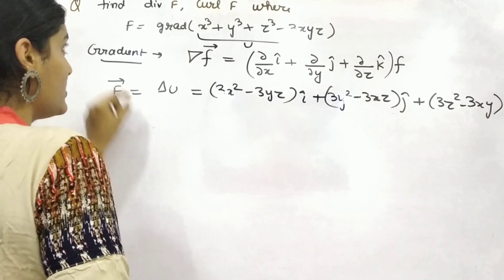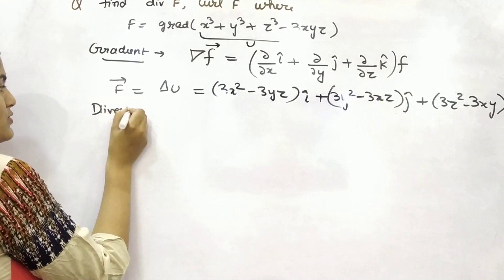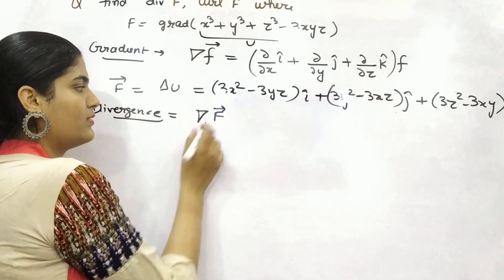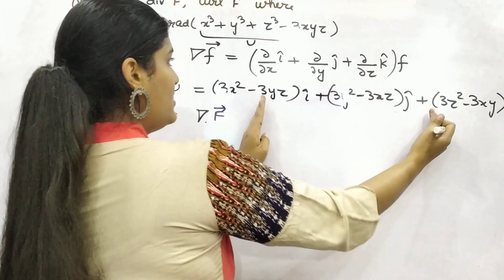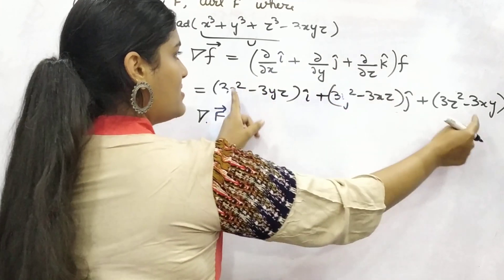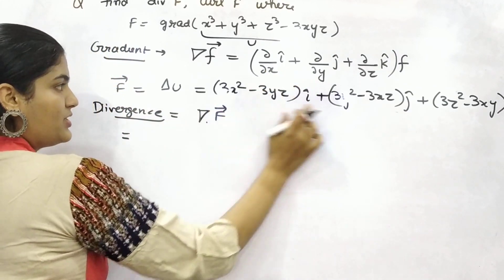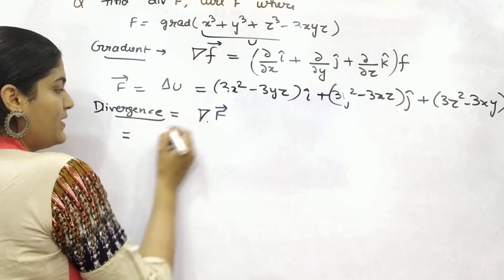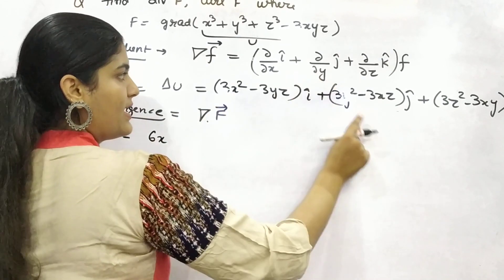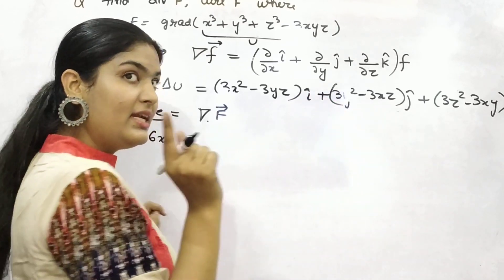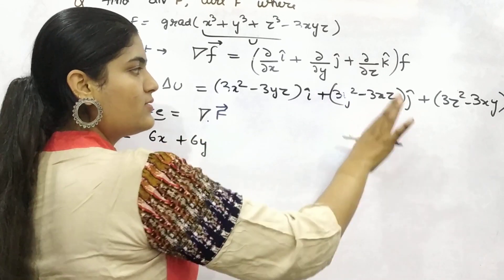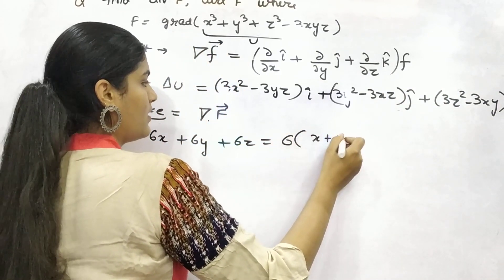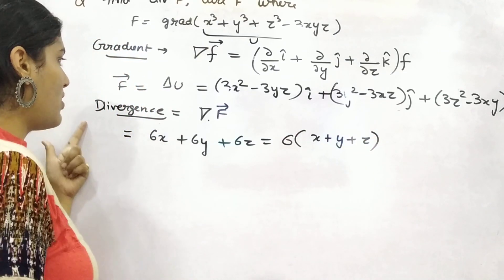Now you have to find out the divergence of f. Divergence is the del dot product applied to that particular function. You need to apply this formula with your function. Differentiate with respect to x — i dot i is 1, so you get 6x (since 3×2=6x) plus 0. Then j dot j is 1, differentiate with respect to y, giving 6y plus 0. And k dot k is 1, differentiate with respect to z, giving 6z. You can take 6 common, so this is your divergence: 6(x + y + z).